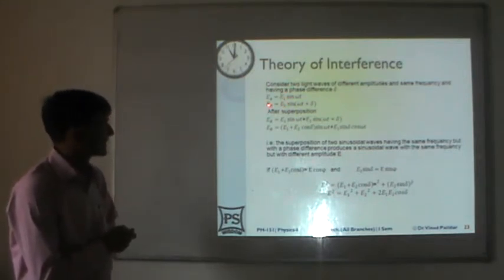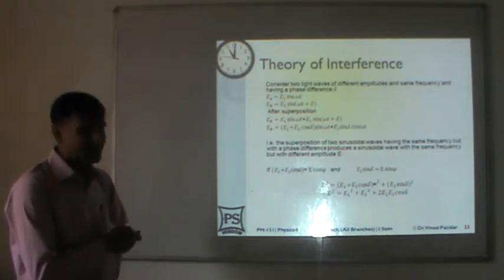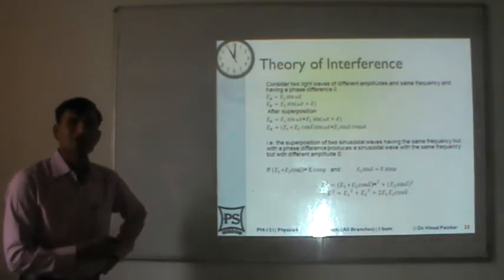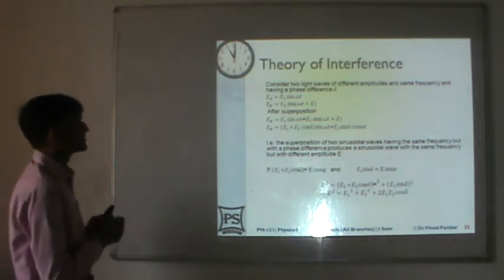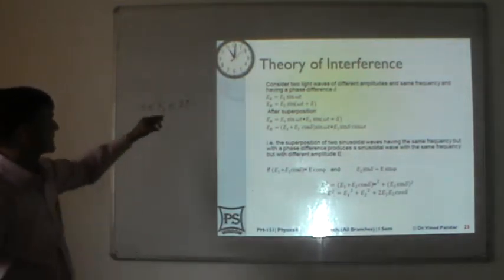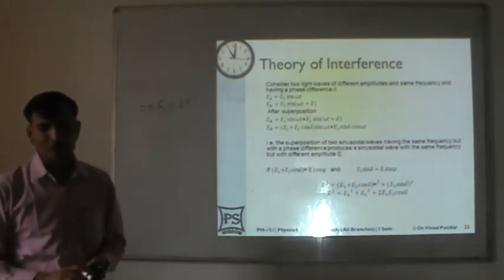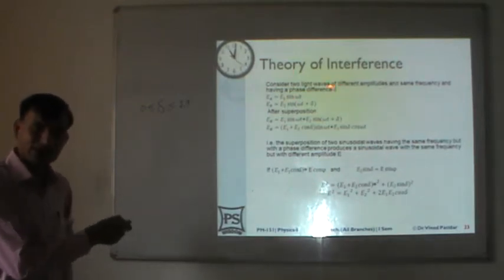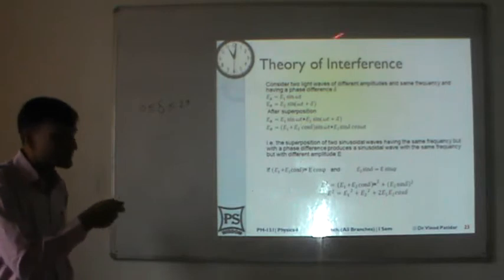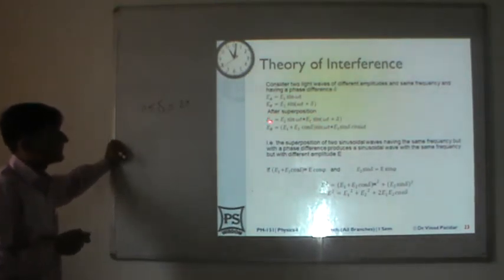Because of superposition, when these two waves pass through a common point the resultant amplitude is Ea + Eb = E1 sin(ωt) + E2 sin(ωt + δ). Expanding using the sine addition formula and combining terms, we can write the resultant as E sin(ωt + φ), where E cos φ = E1 + E2 cos δ and E sin φ = E2 sin δ.